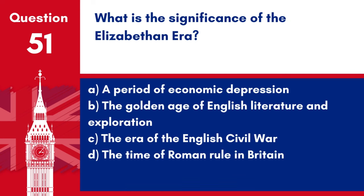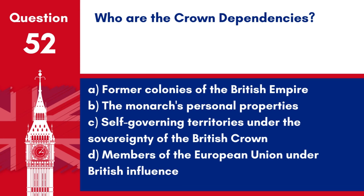Question 51. What is the significance of the Elizabethan era? A. A period of economic depression. B. The golden age of English literature and exploration. C. The era of the English Civil War. D. The time of Roman rule in Britain. Answer: B. The golden age of English literature and exploration. The Elizabethan era is known as a golden age for English literature and exploration, coinciding with the reign of Queen Elizabeth I.